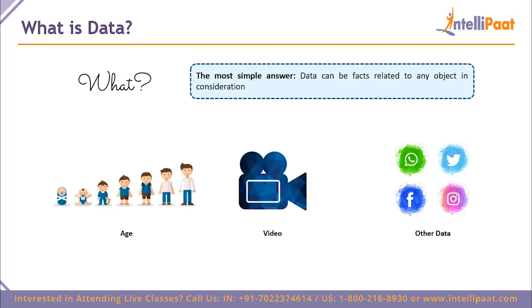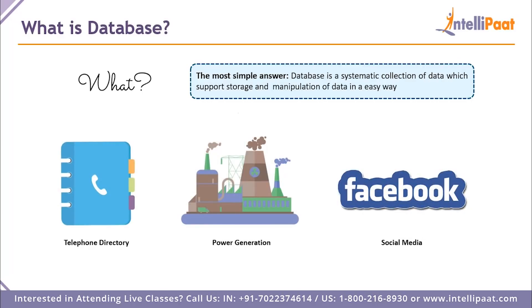When you think about the data generated by social media, it is terabytes worth of data every single hour. WhatsApp lets you send documents and encrypted messages, Twitter lets you send tweets, Facebook lets you upload images, and Instagram and much more as well. What is the different type of data you've come across that you felt was very difficult to handle?